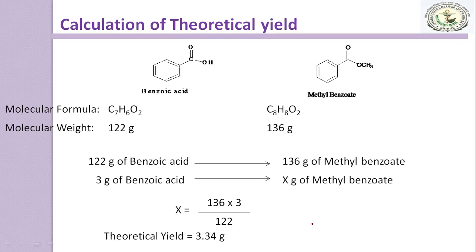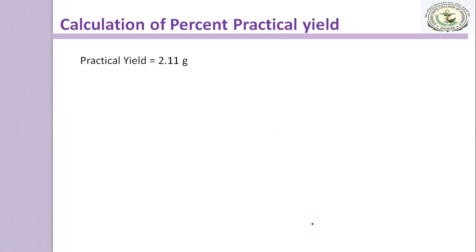Next is the calculation of percent practical yield. Suppose you get 2.11 g of methyl benzoate. You have to take the methyl benzoate which is in liquid form in a suitable container and weigh it. Then calculate the theoretical yield which is 3.34 g.